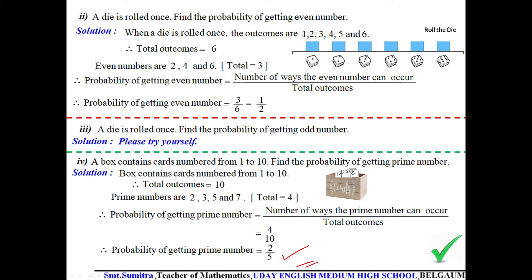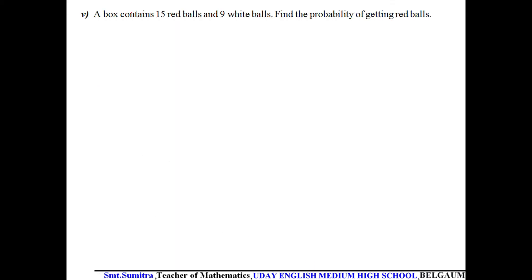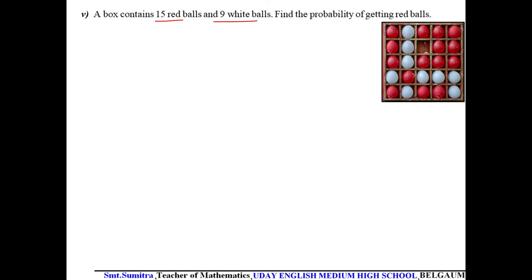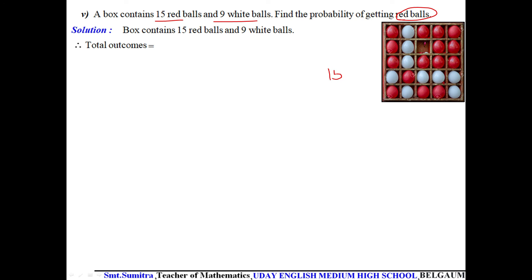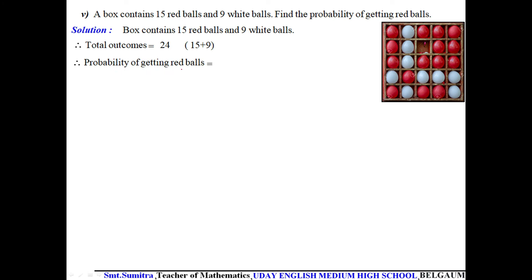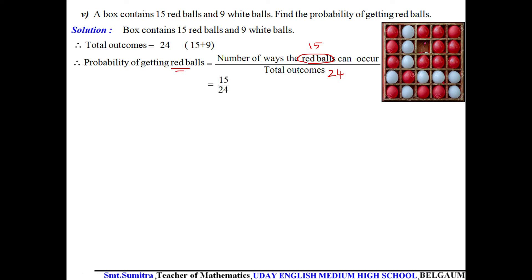Another example: a box contains 15 red balls and 9 white balls. Find the probability of getting a red ball. Total balls = 15 + 9 = 24. P(red ball) = 15/24 = 5/8 after simplification. So the probability of getting a red ball is 5/8.